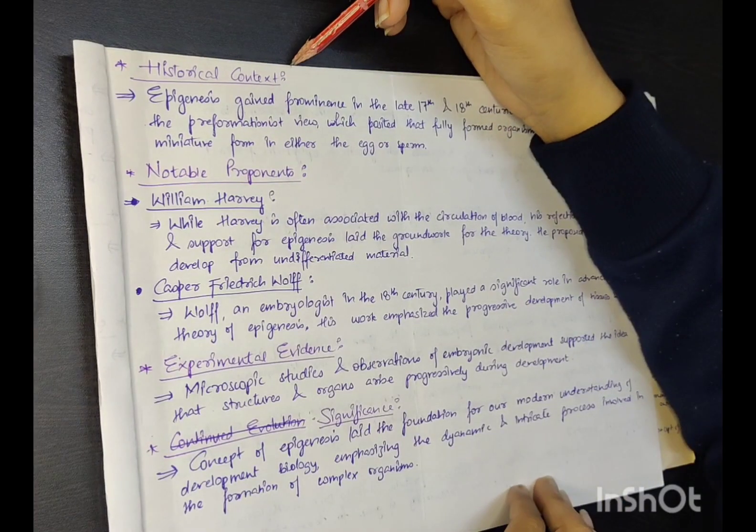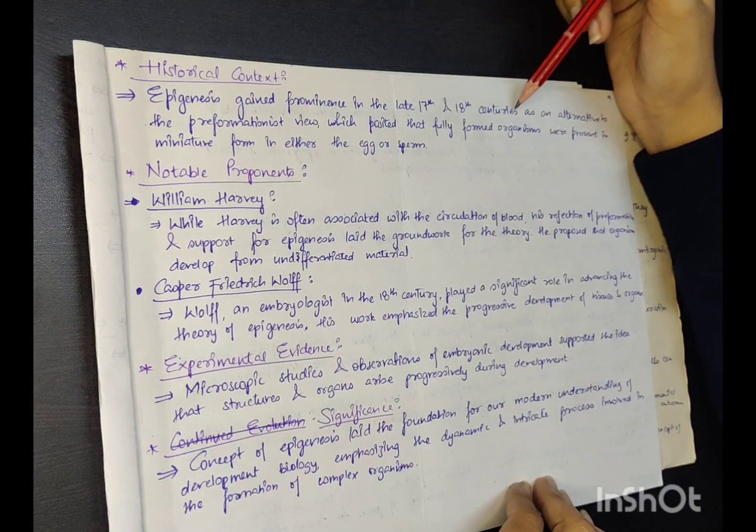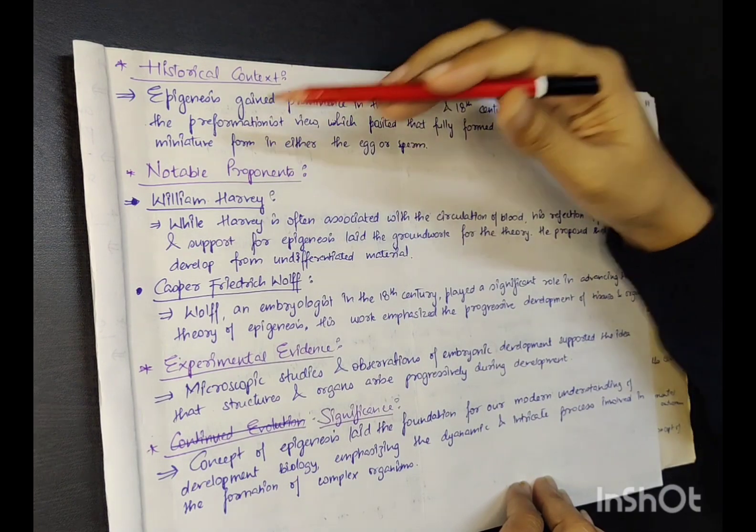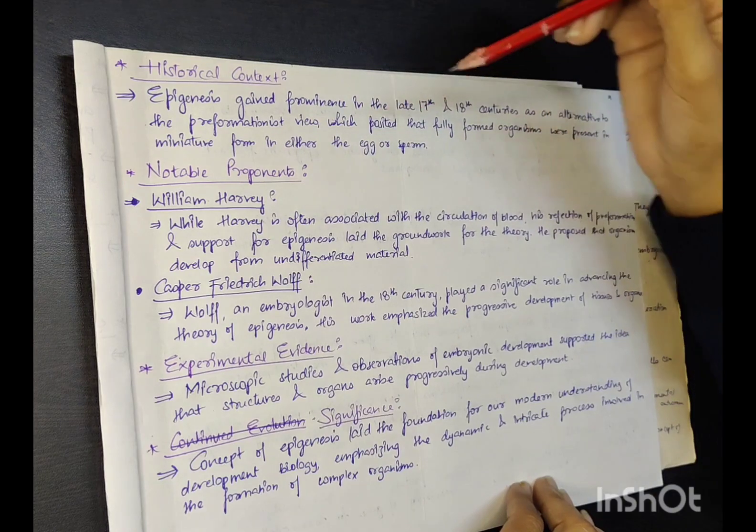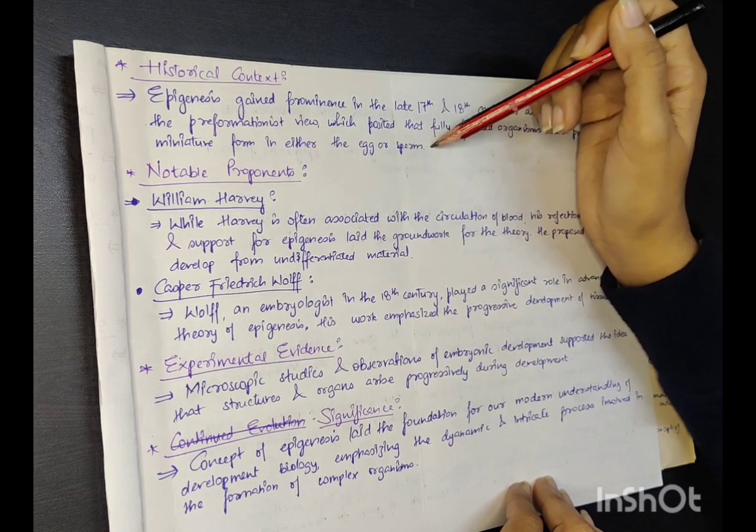Historical context: Epigenesis gained prominence in the late 17th and 18th centuries as an alternative to the preformationist view, which posited that fully formed organisms were present in miniature forms in either the egg or sperm.